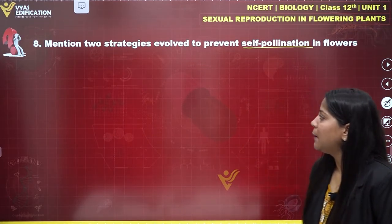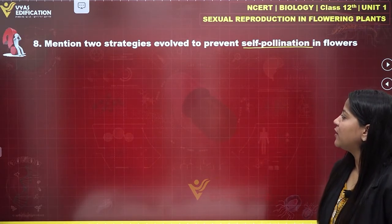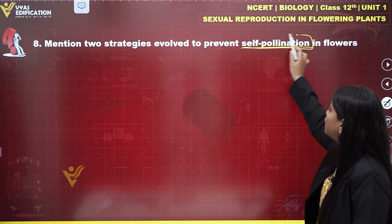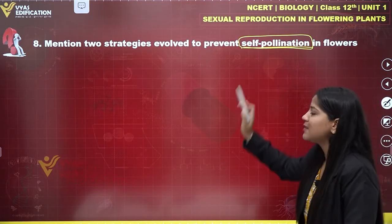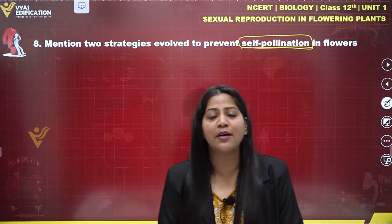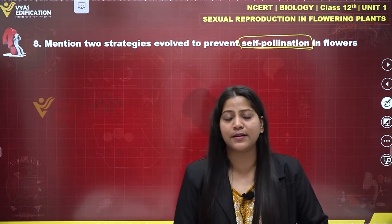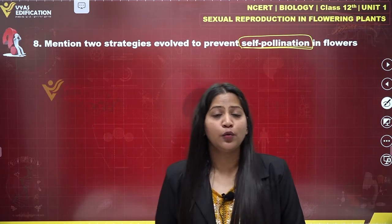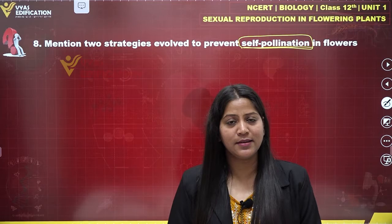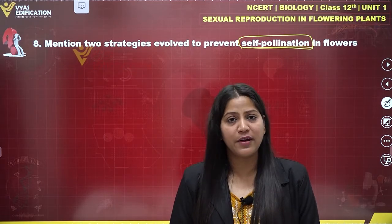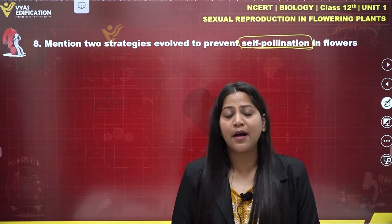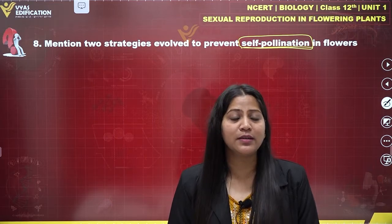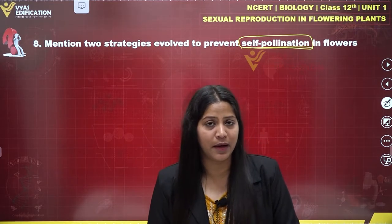Let's talk about question number eight: mention two strategies evolved to prevent self-pollination in flowers. We have to mention some strategies which have evolved in plants to prevent self-pollination. Our NCERT book gives many such strategies, and we will discuss two of them here.